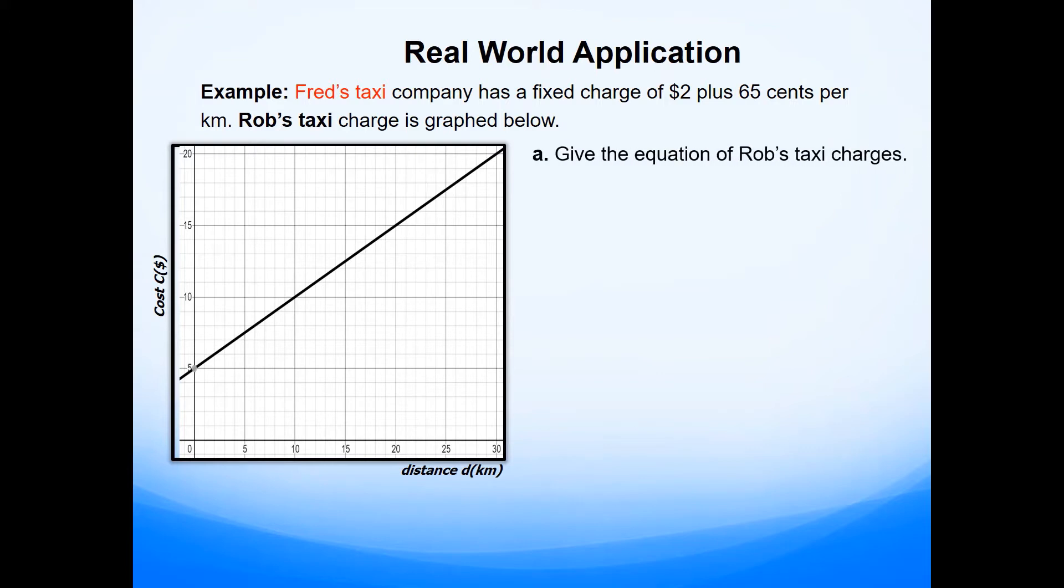So the first part of the question says, give the equation of Rob's taxi charges. To find the equation from the graph, we need two pieces of information. The first one is rise over run, which is the gradient value. And you can see, it starts at 5, and it's gone all the way to 20. So the change is 15. So rise will be 15. And then it has gone across 30. So 15 divided by 30 is 0.5. And then the y-intercept, of course, is 5 in this case.